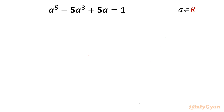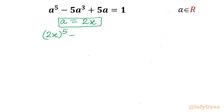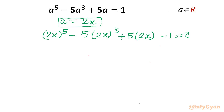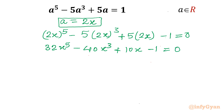Let's get started by giving the very first substitution. I will put a = 2x at the beginning — you will understand why after 3 to 4 minutes. So let us substitute: (2x)⁵ - 5(2x)³ + 5(2x) - 1 = 0. Expanding: 32x⁵ - 40x³ + 10x - 1 = 0.